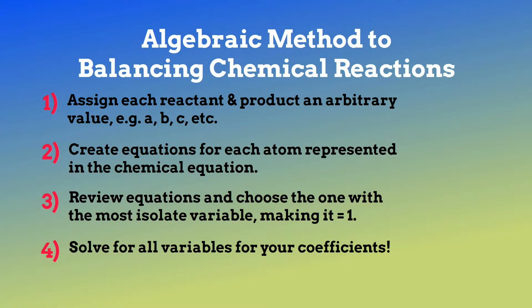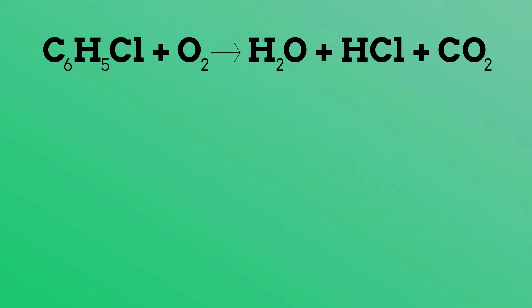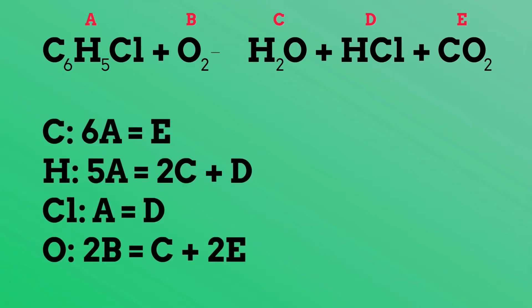Let's solve this equation. We will assign our two reactants and three products variables to solve for — I am using A through E as my variables. Next, we will create equations for each atom represented in the chemical equation.